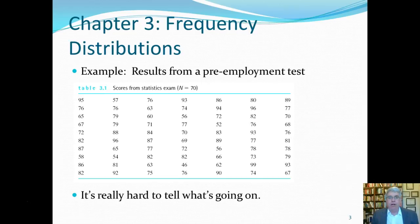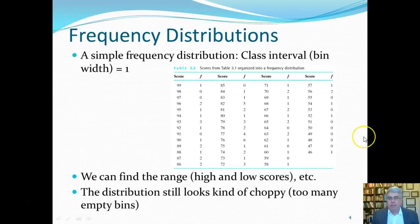So we want to put it into a frequency distribution. We want to look at how many of each type of score that we have. The simplest illustration of frequency distribution that we can have has what's known as a class interval or a bin width of one. It's like when you're sorting laundry and you put different clothes into different bins. It's the same thing with these numbers. We have a bin for 99, a bin for 98, a bin for 97. This is a bin width of one, so it's basically one number fits into each bin.